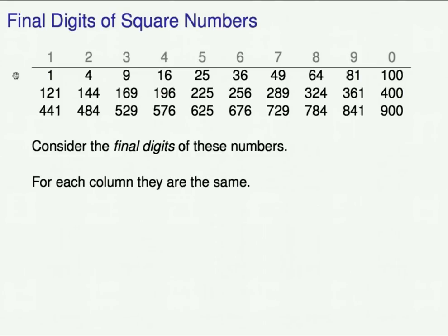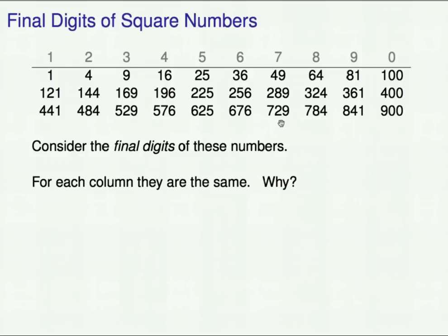In a given column, the final digits are all the same. The final digits of the squares in the first column are all 1, in the second column they're all 4, in the third column they're all 9, and so on. The explanation is that the numbers in a given column — say the third column — are all squares of numbers ending in 3. For example, 9 equals 3 squared, 169 equals 13 squared, 529 equals 23 squared. Similarly, 49 is 7 squared, 289 is 17 squared, 729 is 27 squared — all those numbers end in 7.